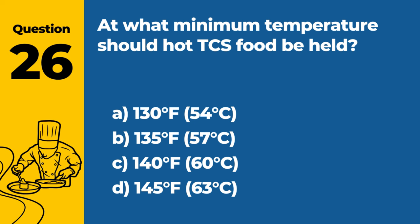Question 40: What steps should be taken if a sanitizer's concentration is too low in a three-compartment sink? A. Continue using it as some sanitizer is better than none. B. Add more water to dilute it further. C. Adjust the concentration to the proper level according to the manufacturer's instructions. D. Use soap instead of sanitizer. Answer: C. Adjust the concentration to the proper level according to the manufacturer's instructions. If the sanitizer concentration is too low, it should be adjusted to the proper level as per the manufacturer's instructions to ensure effectiveness.